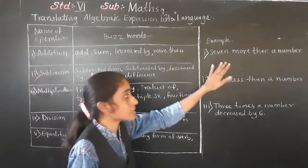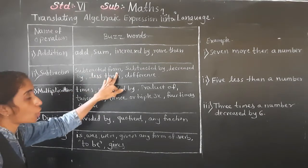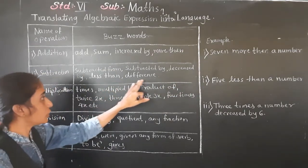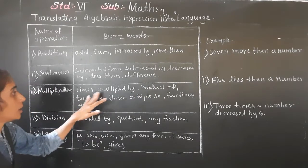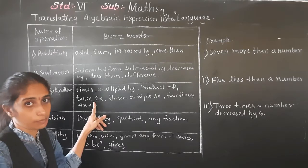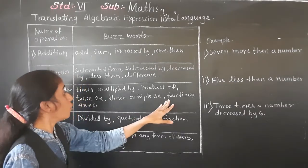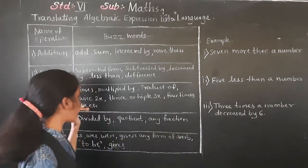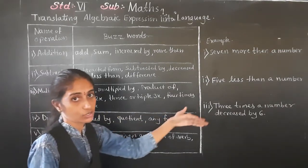For subtraction, the words we use are: subtracted from, subtracted by, decrease by, less than, differs. For multiplication, the words we use are: times, multiplied by, product of, twice (meaning two x), thrice or triple (meaning three x), and four times (meaning four into x).